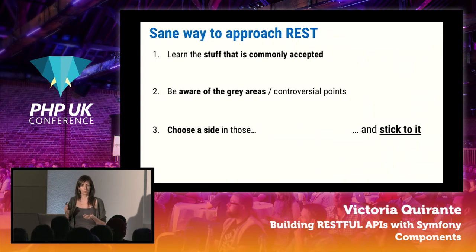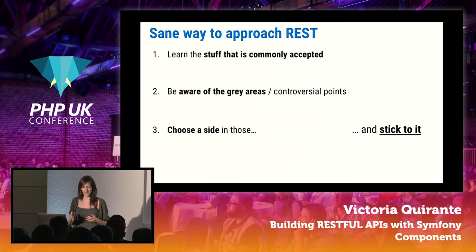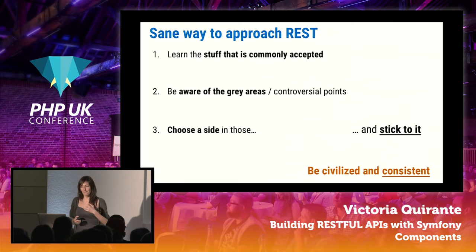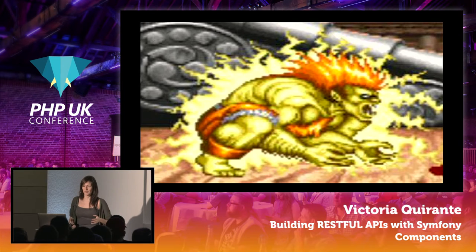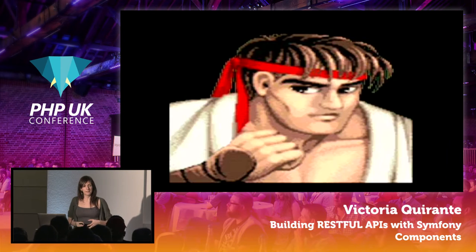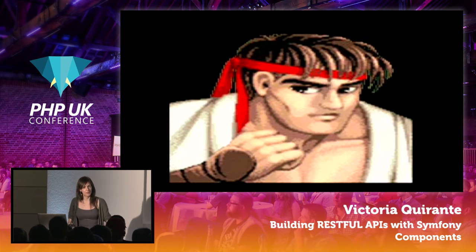The really important thing is to be very, very consistent when building your API. To summarize: try to be civilized and be consistent. The first part is kind of optional — you can get totally mad defending your ideas if you want — but the second part is absolutely necessary. You need to be the cool, calm, and very consistent, even boring guy when it comes to implementing your API.